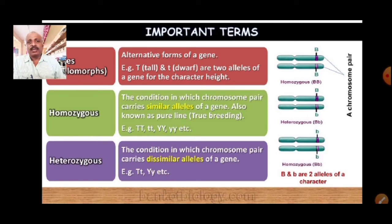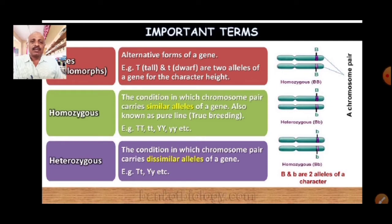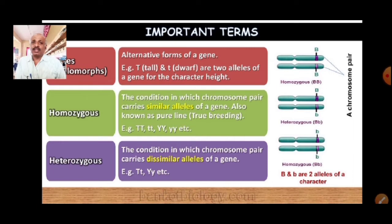Alleles are the alternative forms of the genes — very simple terms. So many times this has been asked in the examination: what is meant by alleles? Alleles are the alternative form of the genes. For example, capital T is the allele representing the trait tall, and small t represents the trait dwarf. These are the two alleles — capital T and small t — for the character height.